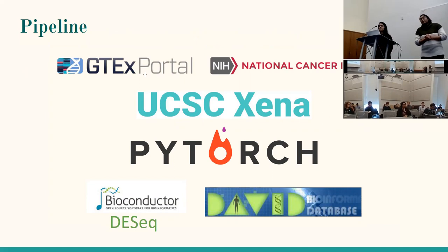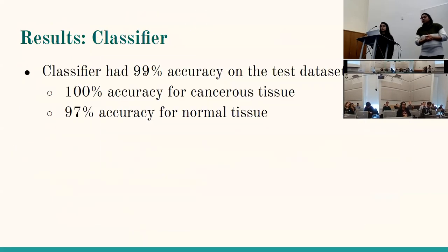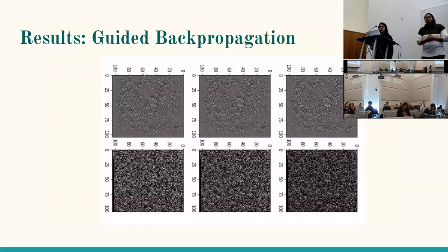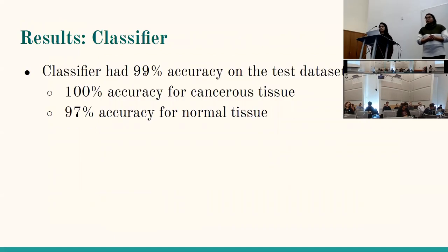A concern was raised that the 99% accuracy seems high and could indicate the classifier is simply always predicting cancer given the class imbalance. It was clarified that accuracy was high across both tissue types — 100% on cancer and 97% on normal tissue — making a trivial classifier unlikely. It was suggested that investigating how the neural network is achieving this, using the guided back propagation results as a starting point, would be worthwhile to ensure the model is learning biologically meaningful features rather than artifacts.